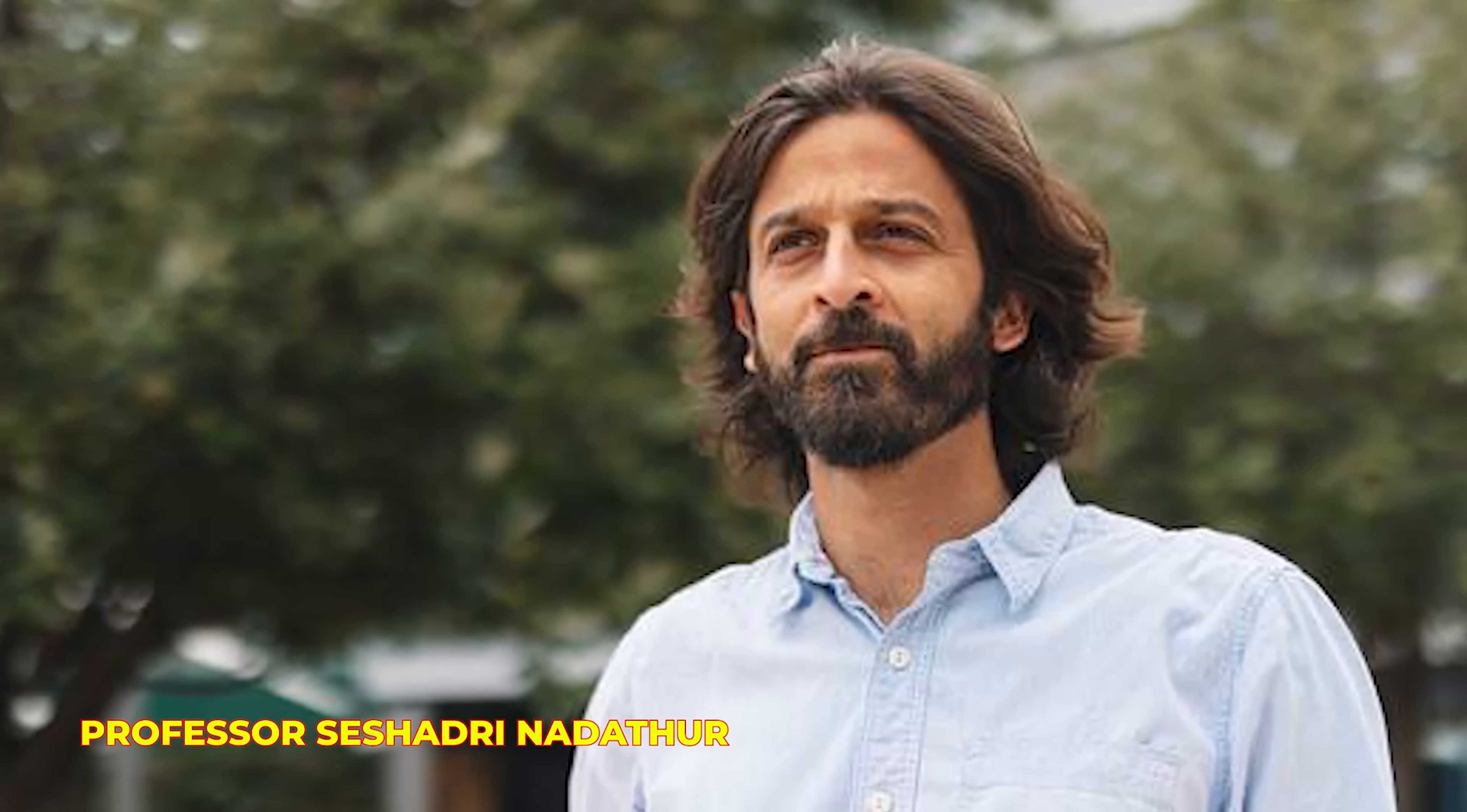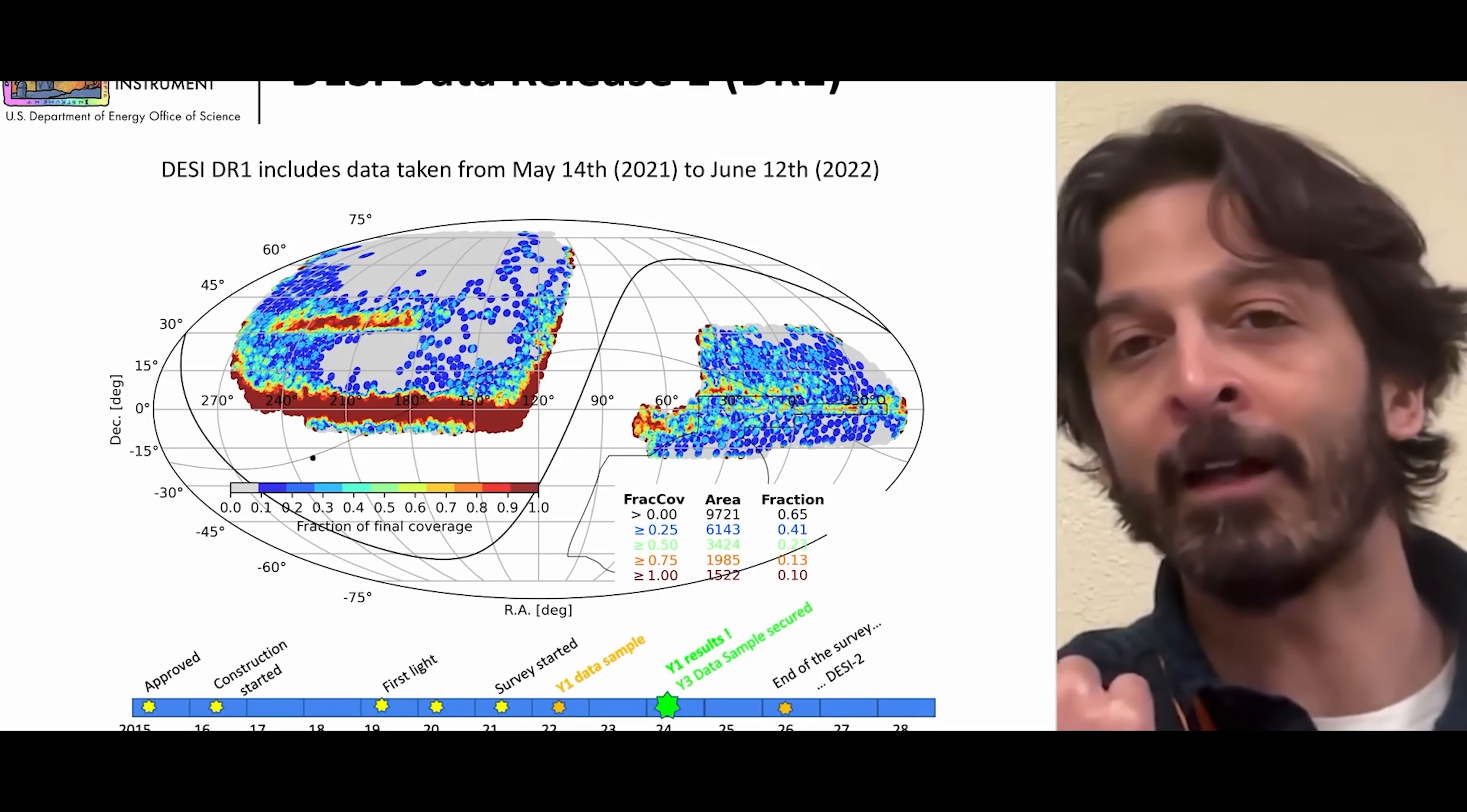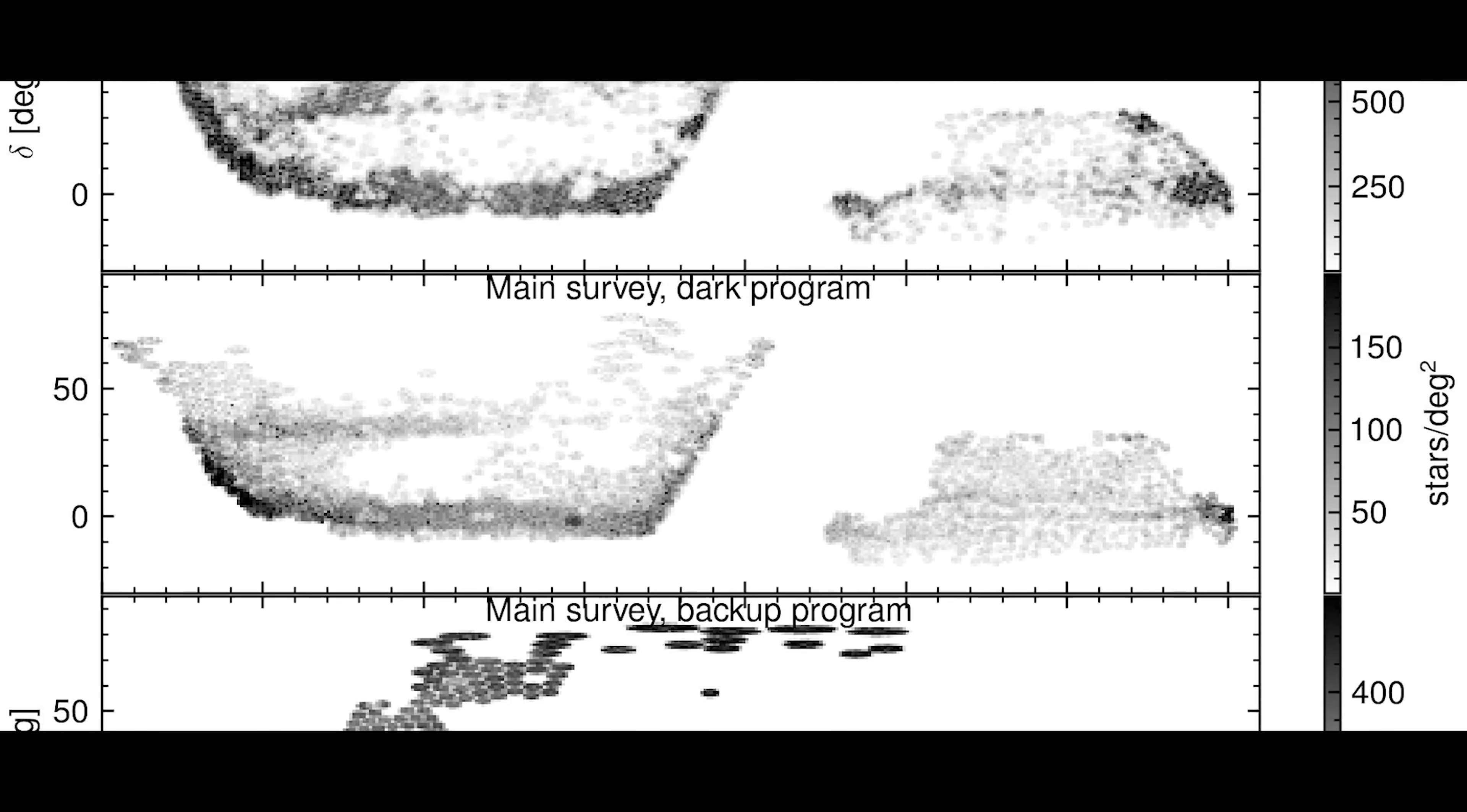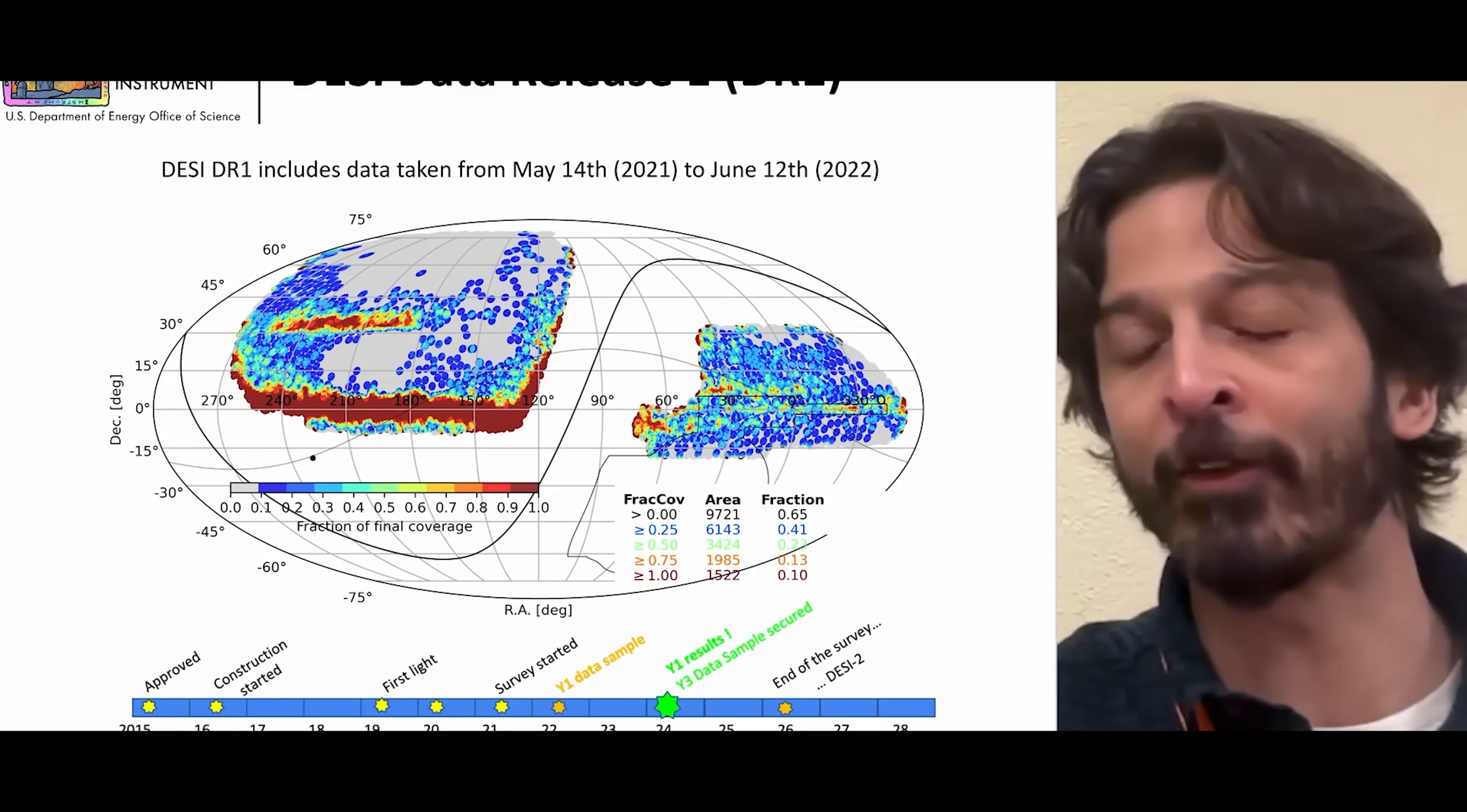Professor Sashadri Nadathir from the University of Portsmouth mentioned that they have conducted numerous additional tests since the first year. As Andreu was hinting, there are analyses that are at different levels of readiness, so where some of them we can almost press play and just repeat it, like the BAO analysis. And others where even the DR1 analyses are not yet complete, we haven't released those results.